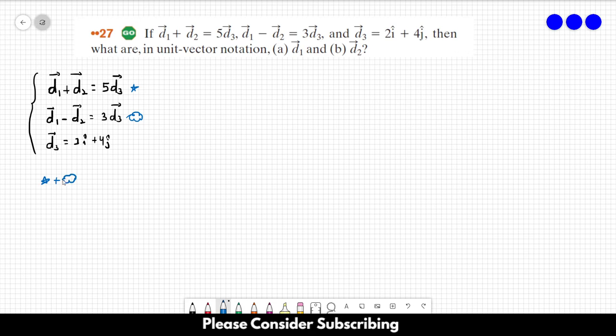So star plus cloud, that's what I'm doing. So we will have 2 times d1, so d1 plus d1, d2 minus d2, so that term goes away. In the other side we have 8 times d3, so d1 is equal to 4d3.